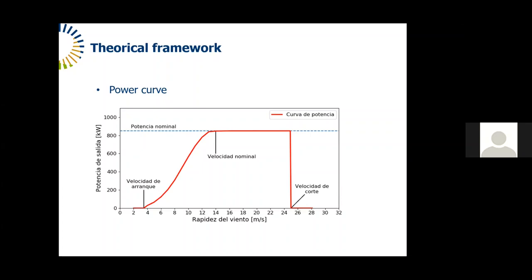A wind turbine converts the kinetic energy of the wind into electrical energy. Each wind turbine has a power curve, which indicates the relationship between power generation and wind speed. It is possible to identify three main zones: the cut-in wind speed, which is the speed at which the wind turbine begins to produce energy; the rated wind speed, at which it produces its rated power; and the cut-out wind speed, at which the wind turbine is disconnected and stopped for safety reasons.